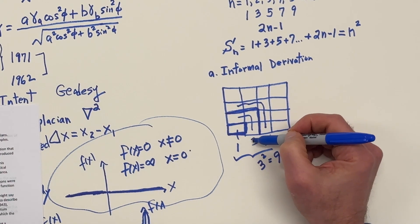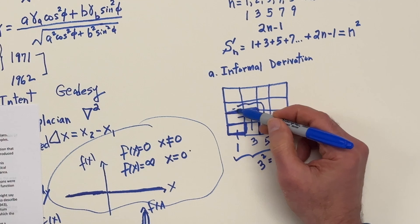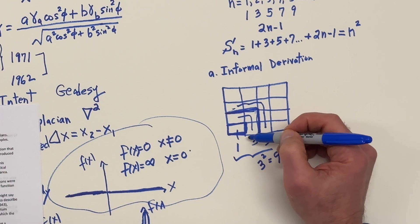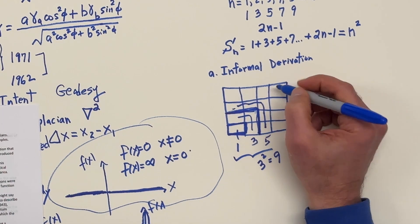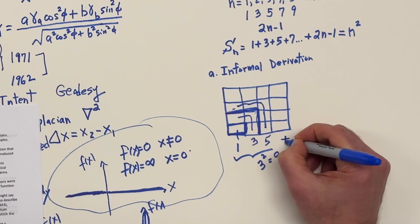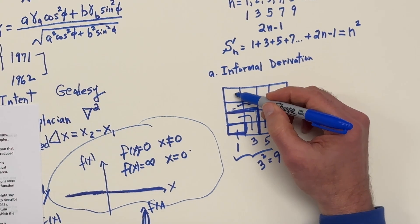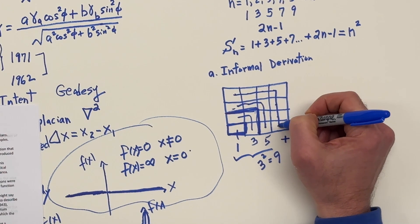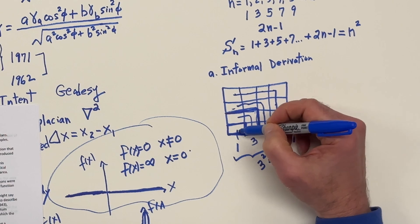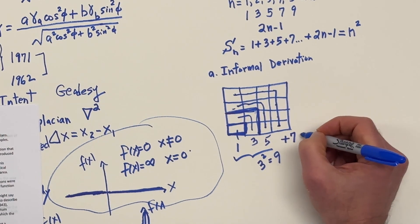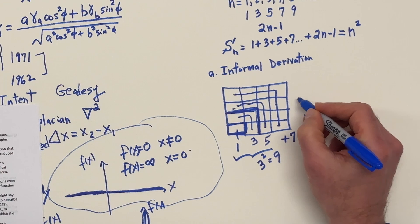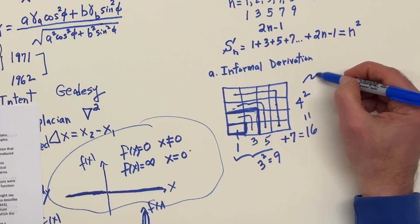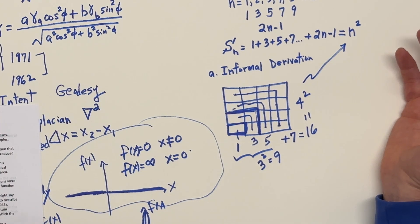Looking at the second case with just one and three: that's a 2×2, which gives four — two squared. If we add the next odd integer, seven, that adds seven more blocks and we get a 4×4 square with 16 total — four squared, the fourth case. So a physicist is happy: the nth case is going to be n squared.